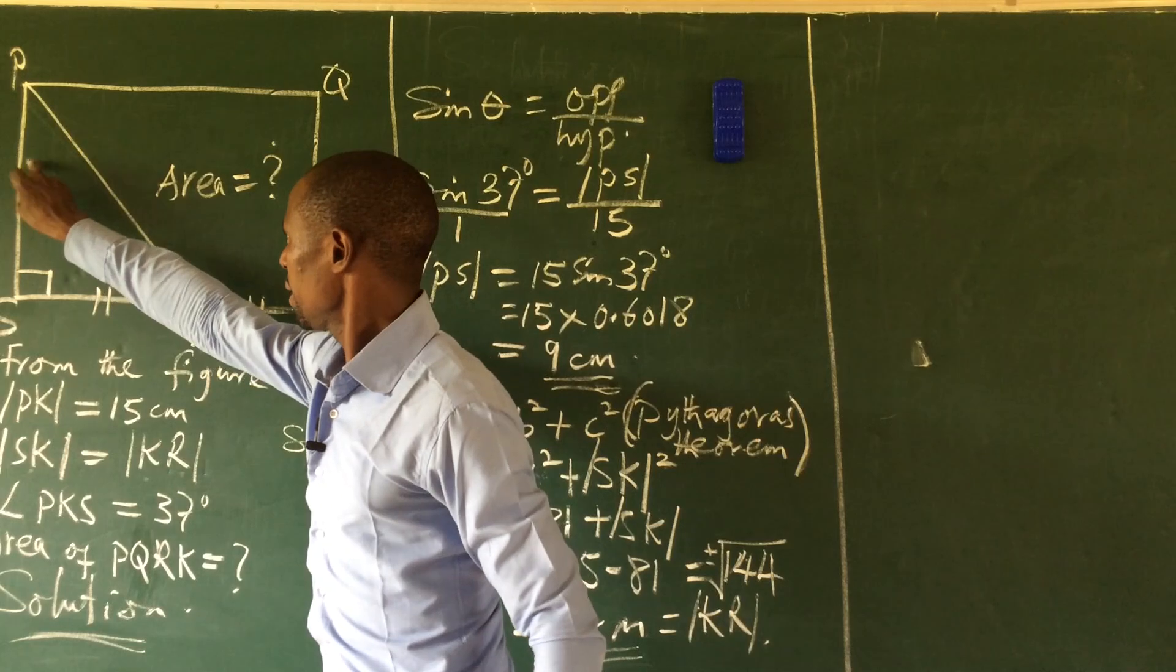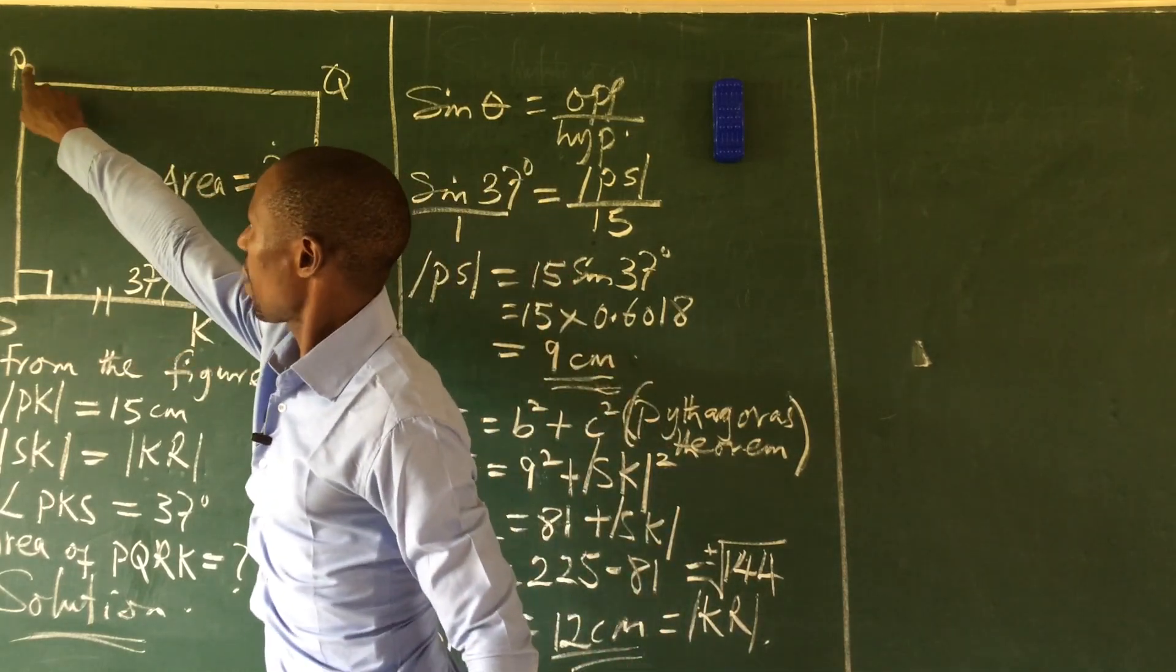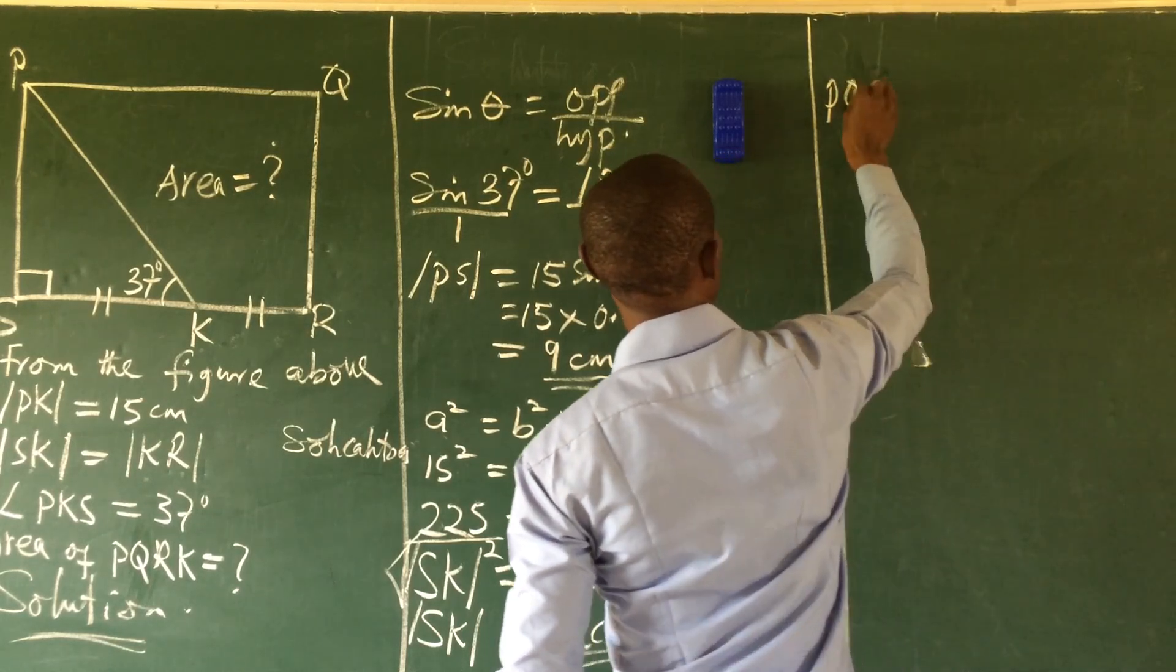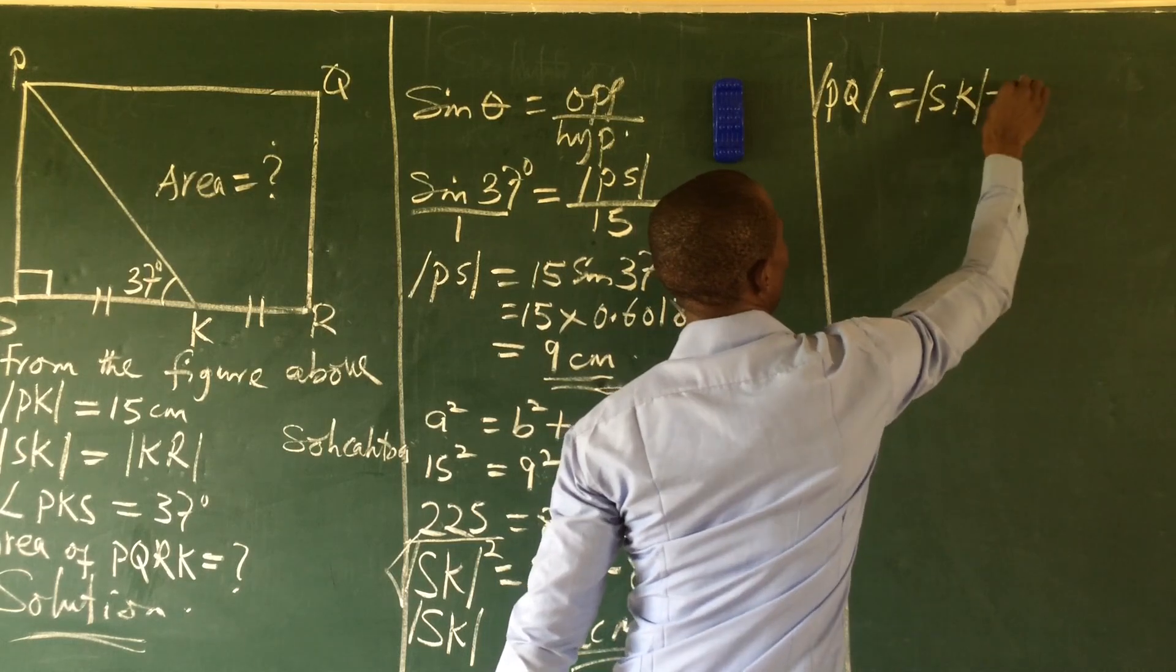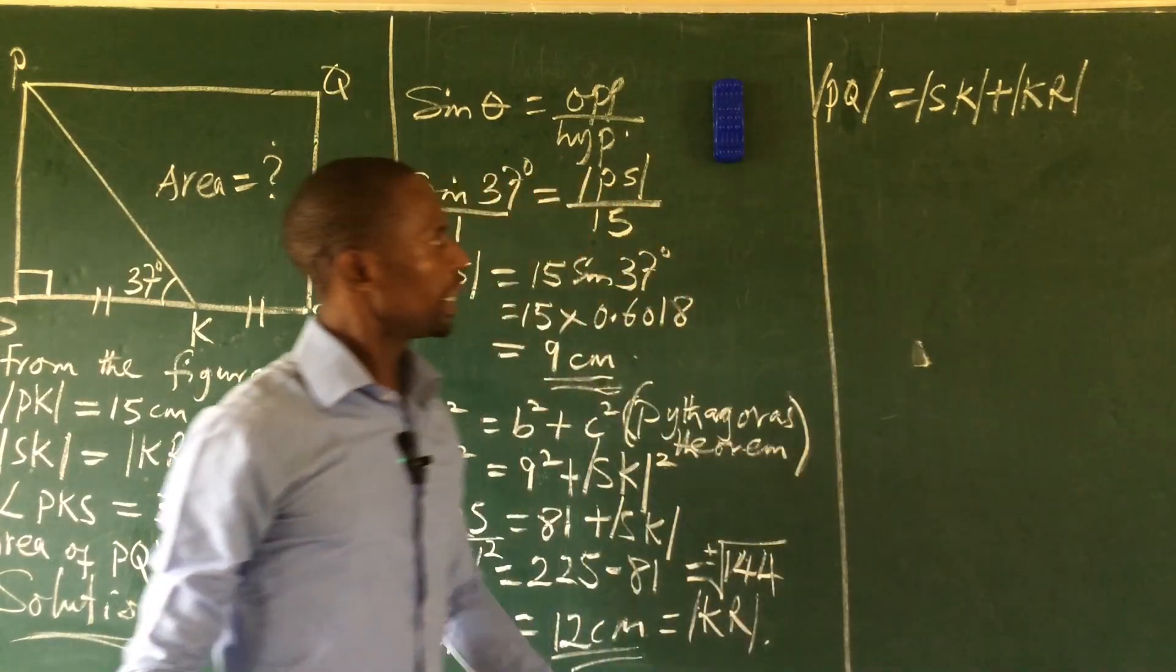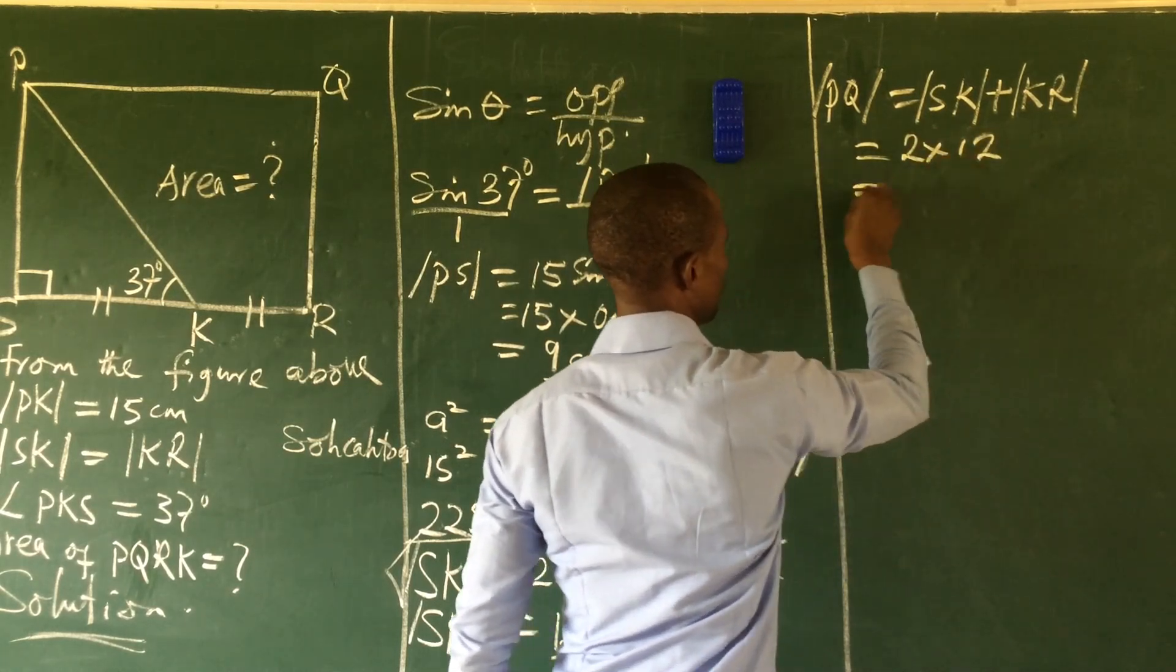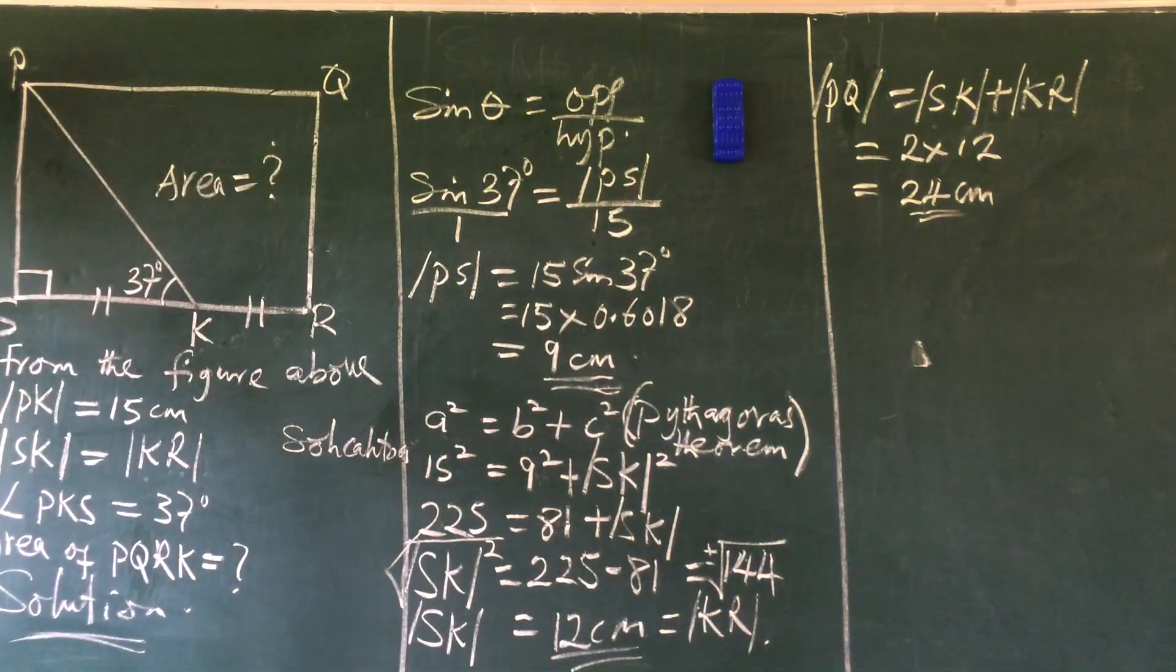Now that we've succeeded in getting the height and SK, we can now calculate PQ. Line PQ is equal to line SK plus line KR. So we have 12 plus 12, which gives us 2 times 12, which equals 24 cm. We succeeded in getting our PQ and our PS.